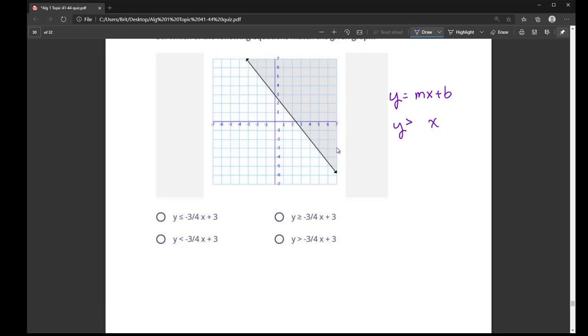Now it is a solid line, so because it's a solid line, I know that my inequality symbol has to be equal to as well. So I can eliminate these bottom two options that don't have the equal to part of the symbol.